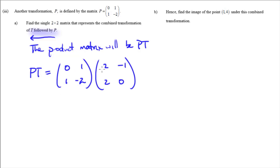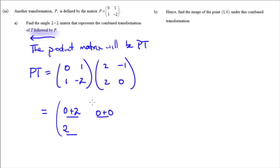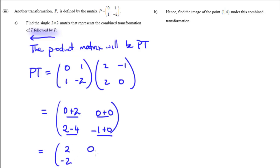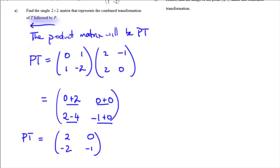Now we multiply these two matrices. For the top-left entry: 0 times 2 plus 1 times 2 equals 2. Top-right entry: 0 times minus 1 plus 1 times 0 equals 0. Bottom-left entry: 1 times 2 plus negative 2 times 2 equals 2 minus 4, which is negative 2. Bottom-right entry: 1 times minus 1 plus negative 2 times 0 equals minus 1. So PT equals 2, 0, minus 2, minus 1. This is the matrix for T followed by P — always remember, we read from right to left for combined transformations.